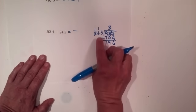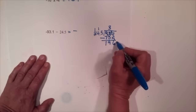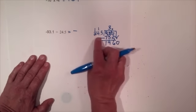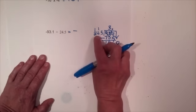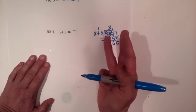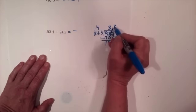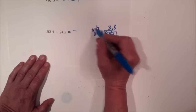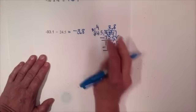Now I need to ask how many times does twenty-four point five go into one hundred ninety-six? Bring down the zero. Twenty-four doesn't go into nineteen, so I look at twenty-four going into one ninety-six. Estimating with twenty-five: twenty-five, fifty, seventy-five, a hundred, a hundred twenty-five, a hundred fifty, a hundred seventy-five — I'll estimate eight. Eight times five is forty, carry the four; eight times four is thirty-two plus four is thirty-six, carry the three; eight times two is sixteen plus three is nineteen. It comes out evenly, so dividing gives negative three point eight.